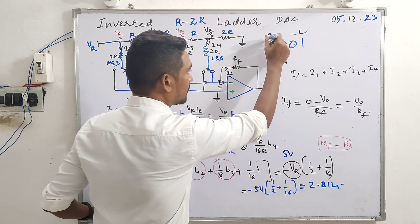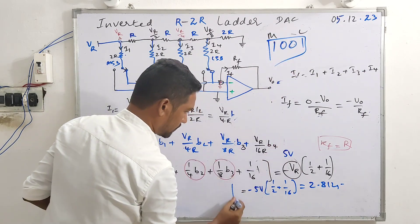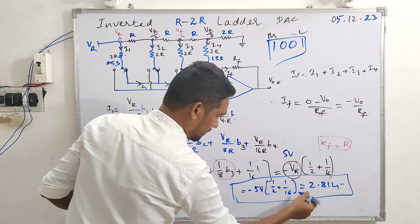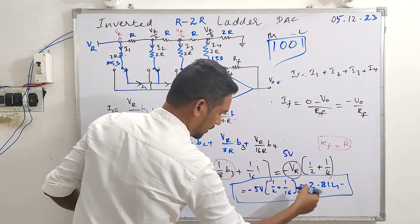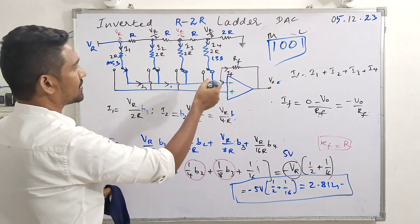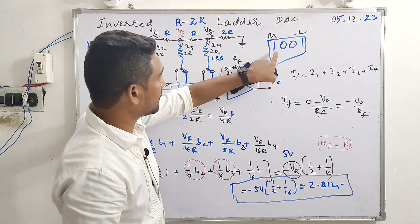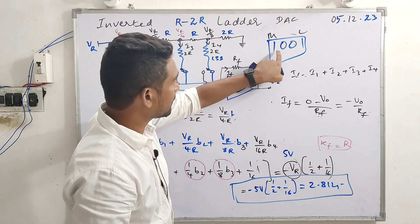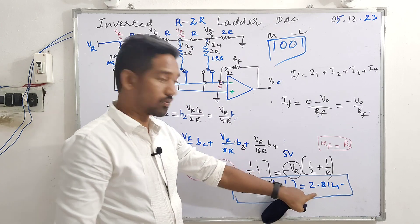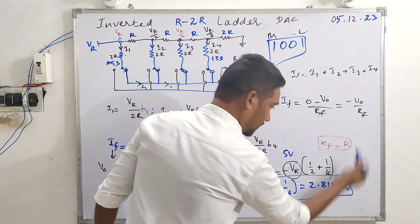For this binary input, this will be the analog output from the DAC. Please don't get confused — the binary value is 9 but the output is not 9 volts; that is not how it works. Thanks for watching.